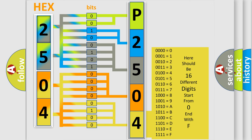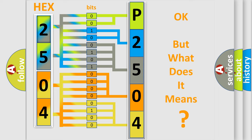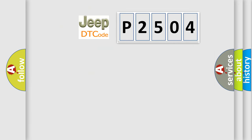We now know in what way the diagnostic tool translates the received information into a more comprehensible format. The number itself does not make sense to us if we cannot assign information about what it actually expresses. So, what does the diagnostic trouble code P2504 interpret specifically for Jeep car manufacturers?